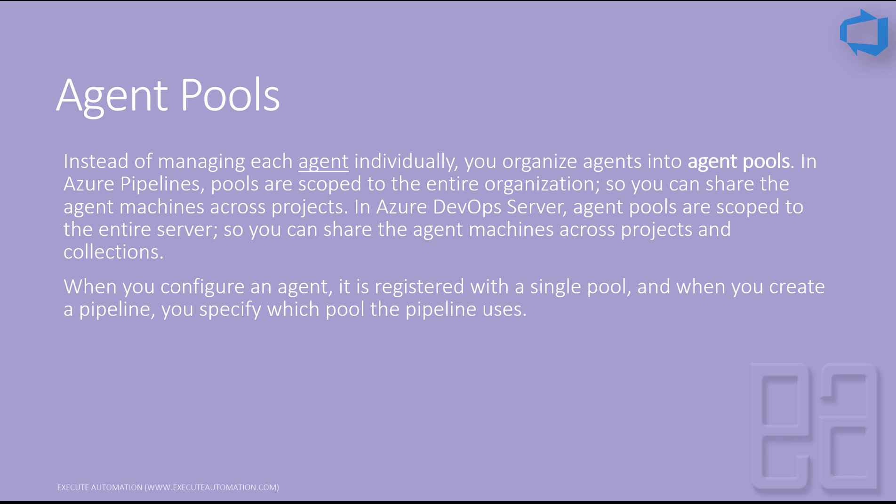In Azure DevOps Server, agent pools are scoped to the entire server, so you can share agent machines across projects and collections. For example, we already created an Azure DevOps project — the Udemy Course project — within the organization, and this pool can be shared across different projects within the same organization.